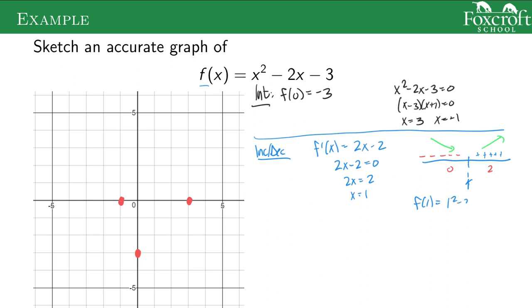So f of 1, 1 squared minus 2 times 1 minus 3, negative 1, negative 4. So the exact point, 1 comma negative 4, is on my graph. And that's where the switch happens from decreasing to increasing.